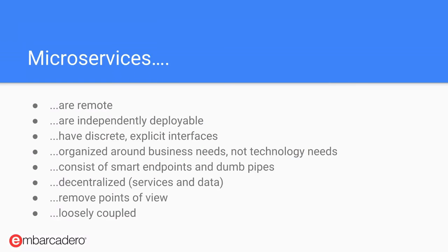Microservices are remote — they can be used from anywhere, pulling data from computers all over the world into a single application. They're independently deployable, with discrete and explicit interfaces. Each individual microservice has its own API. Importantly, they're organized around business needs and not technology needs. One team will be focused on sales, another on inventory, another on HR, rather than having the technology such as MVC drive how you define your application.